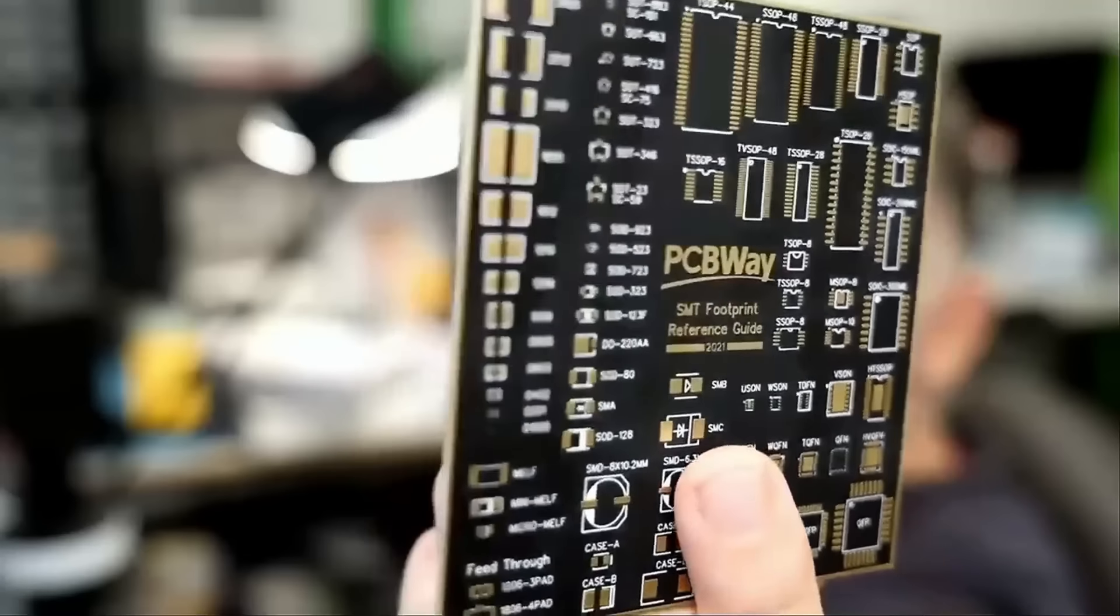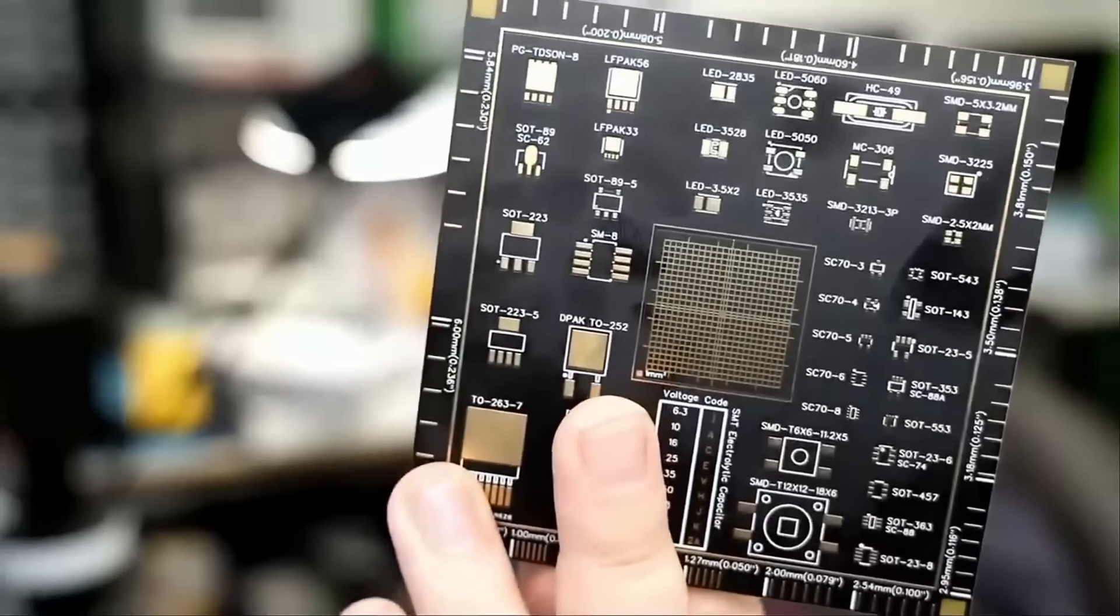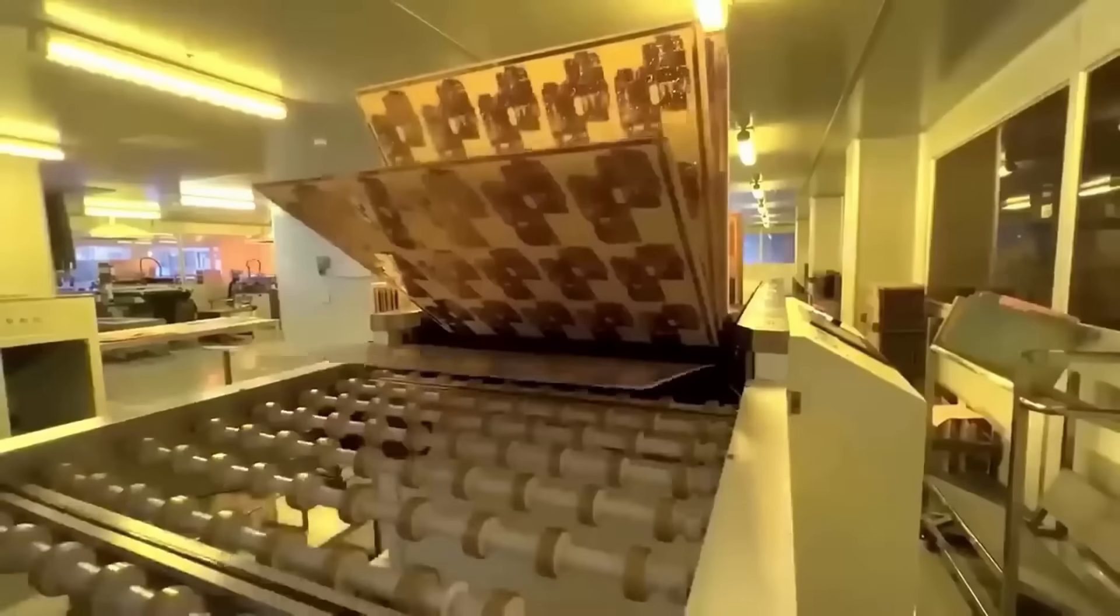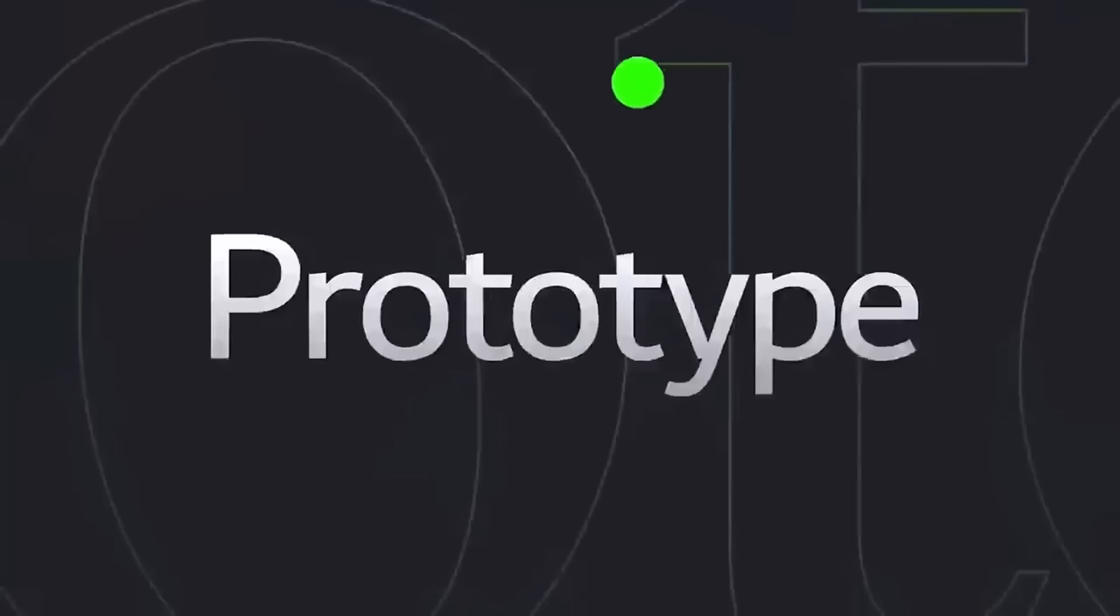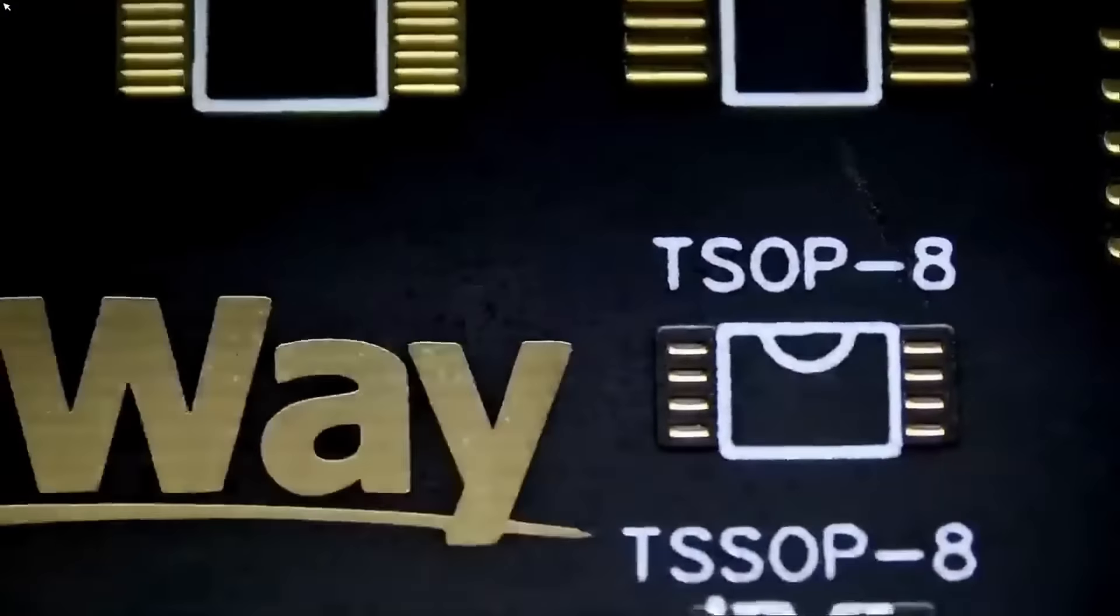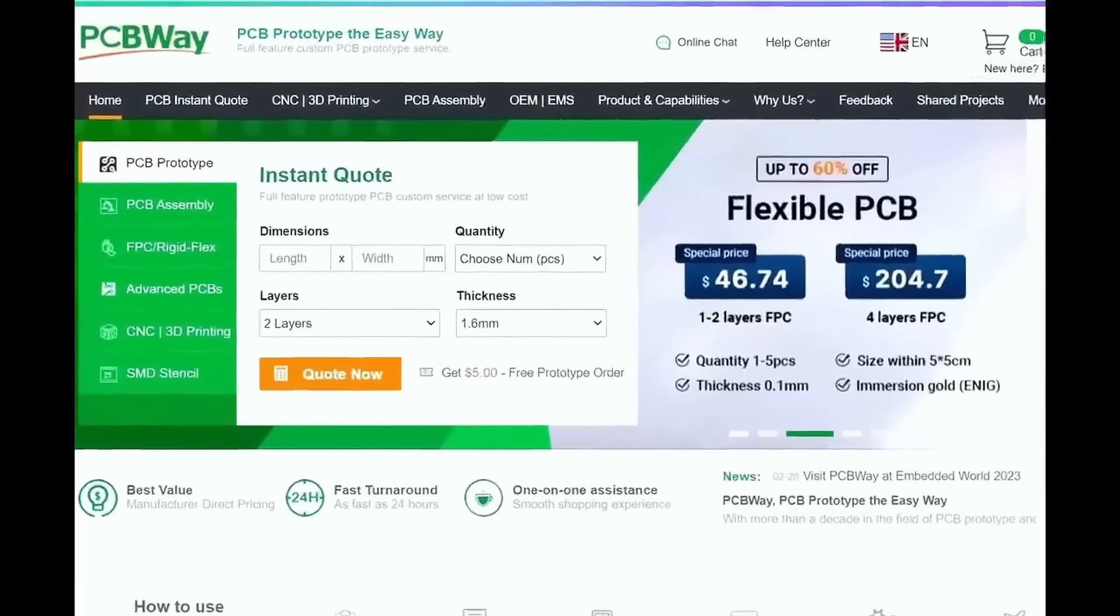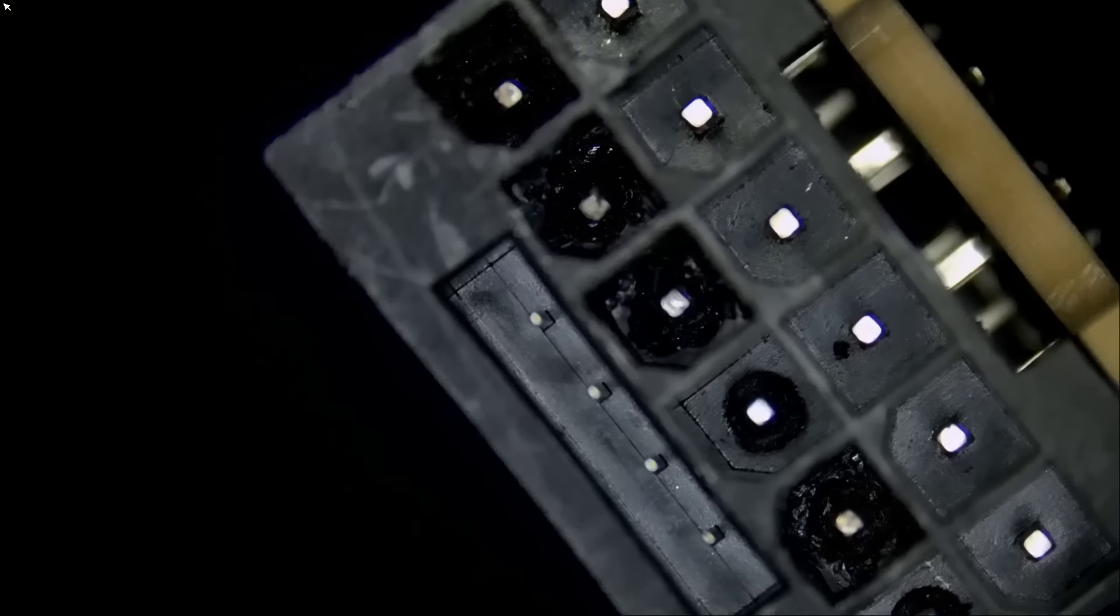PCBway is committed to meeting all your PCB needs. They offer quality, on-time delivery, and competitive pricing. One to two layer boards start at five dollars with 24 hours turnaround. Get an instant quote by visiting PCBway.com or click on the link below and make sure to check them out.